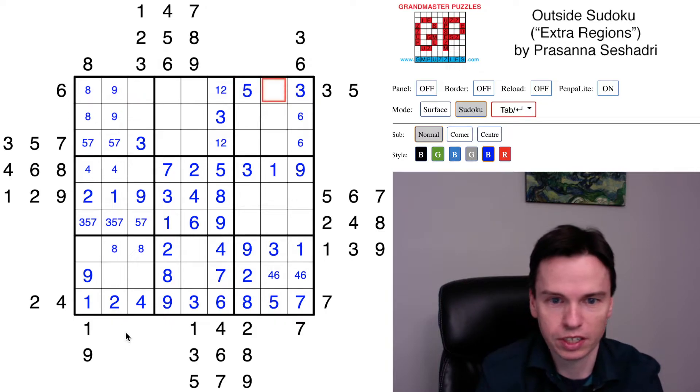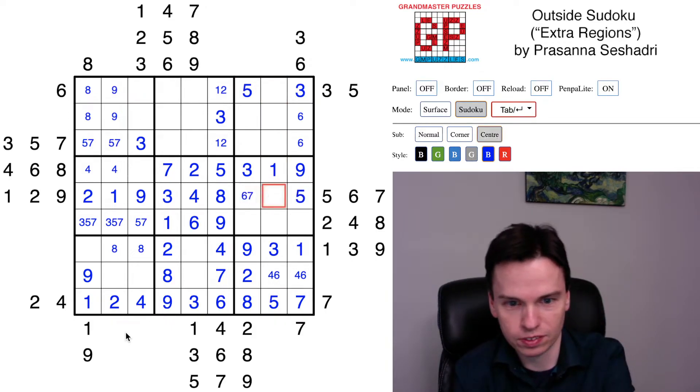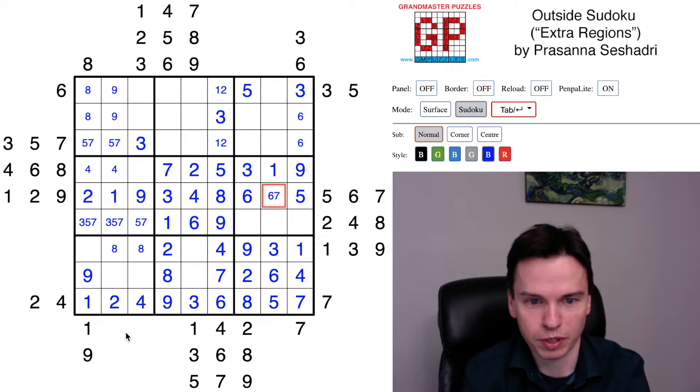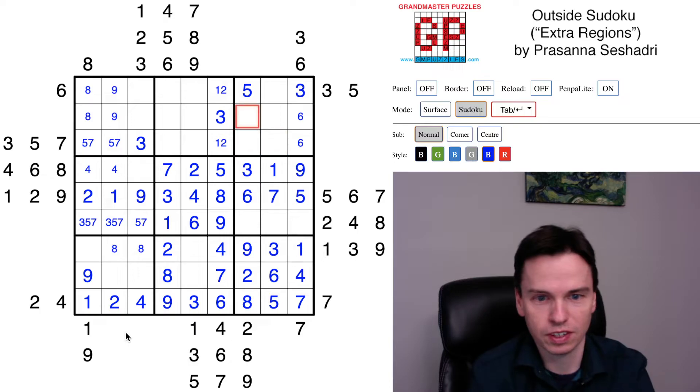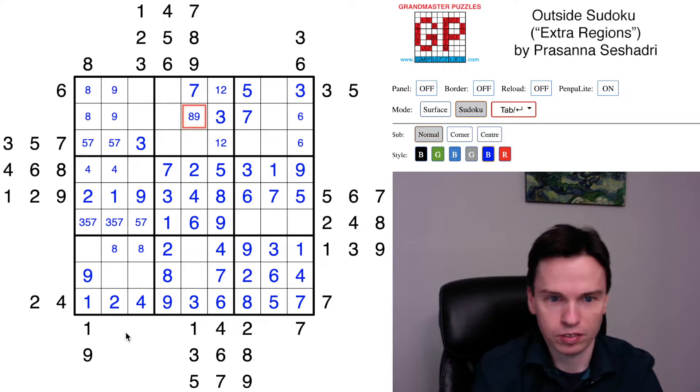This 4, 6 gives me this 5 and this 3. Does this 5 help me? It gives me this 5 which gives me this 5. I've got 6, 7 to go in these cells. The 6 up above actually gave me this 6 earlier, I just hadn't marked it.